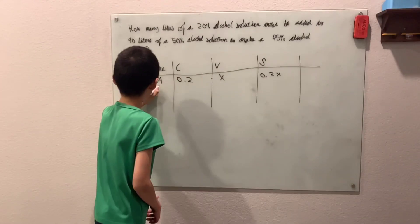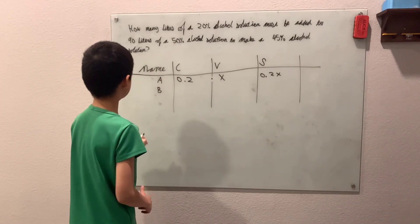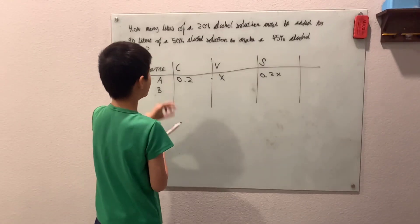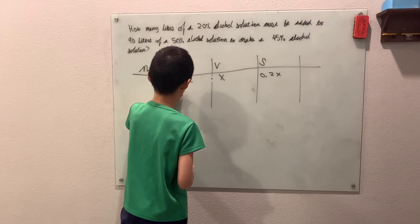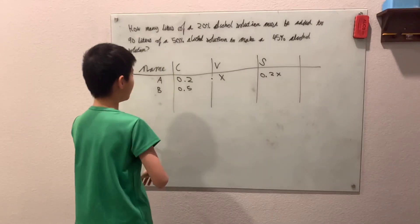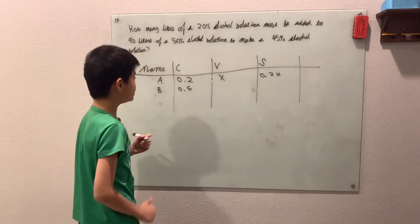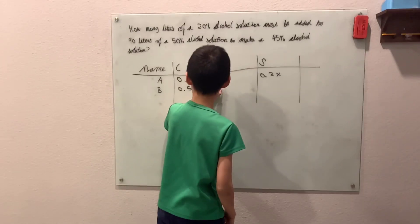Okay, so the next one, name B or mixture B. So the concentration would be 50% or 0.5. The volume we already know is 90 liters of a 50% alcohol solution, 90 liters.